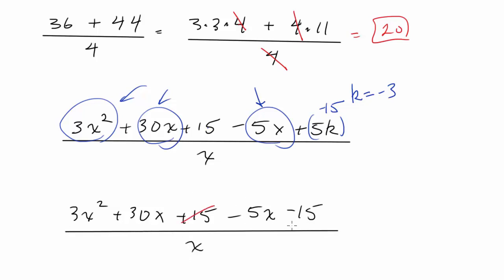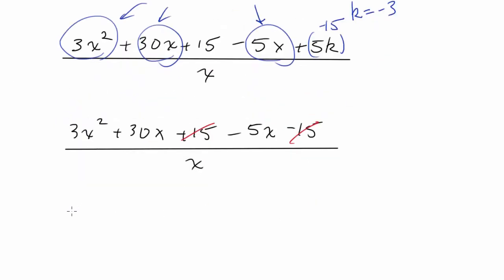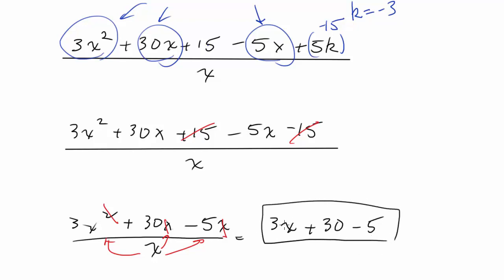Now 15 minus 15 cancel. So we're just left with 3x squared plus 30x minus 5x all over x. And now this x divides into each of these terms, cancels an x here, cancels an x here, cancels an x here. So what we'd be left with is 3x plus 30 minus 5, which ultimately is some number. But the point is, it's divisible. Each of these x's goes in equally, we're good to go.